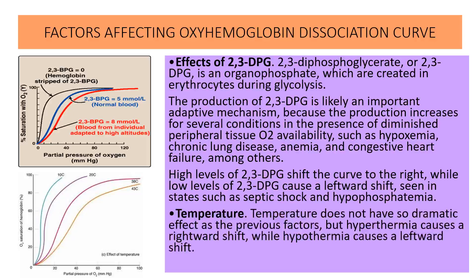Next is the effect of temperature. Temperature does not have as dramatic an effect as the previous factors, but hyperthermia causes a rightward shift while hypothermia causes a leftward shift — so increases and decreases in temperature shift the curve accordingly.